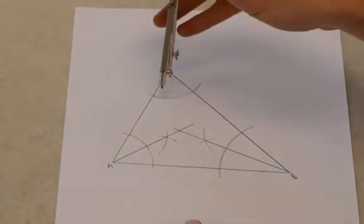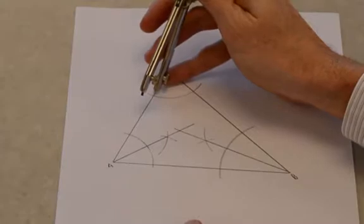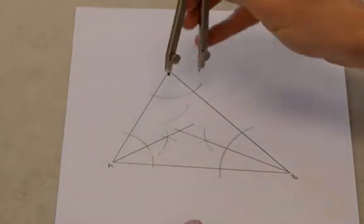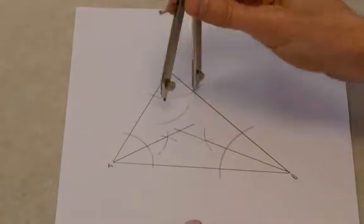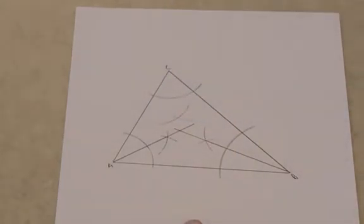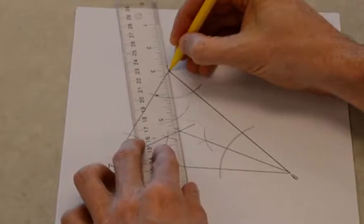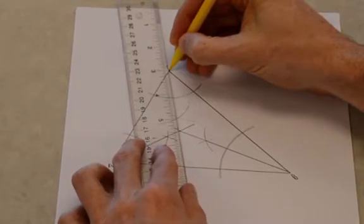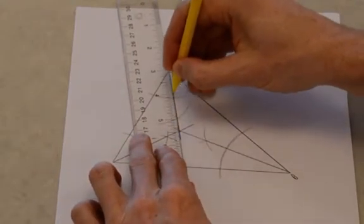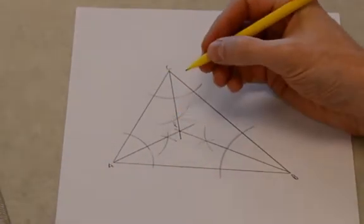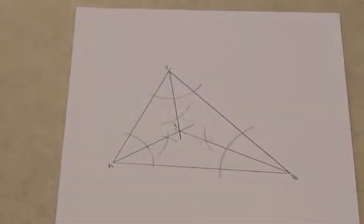So I'm just going to bisect angle C. It doesn't really take that long to do anyway. OK, so there's my point P. That is the in-center of triangle ABC. It's the intersection of the three angle bisectors.